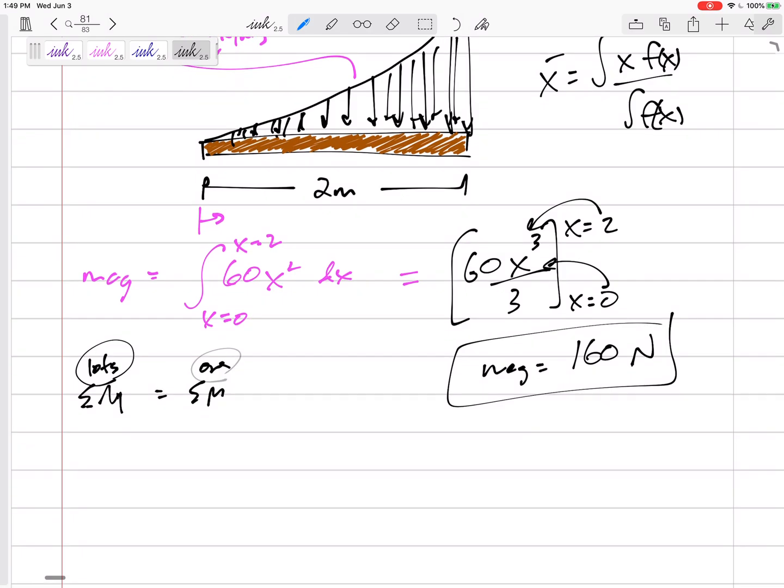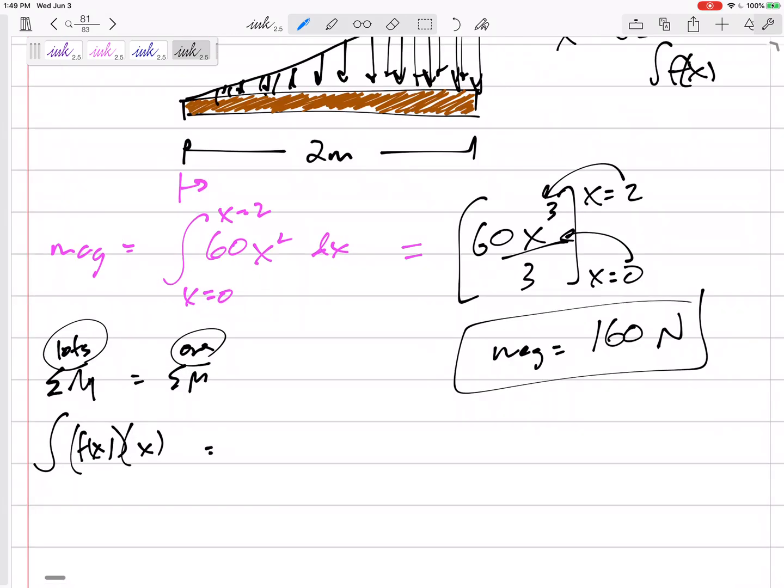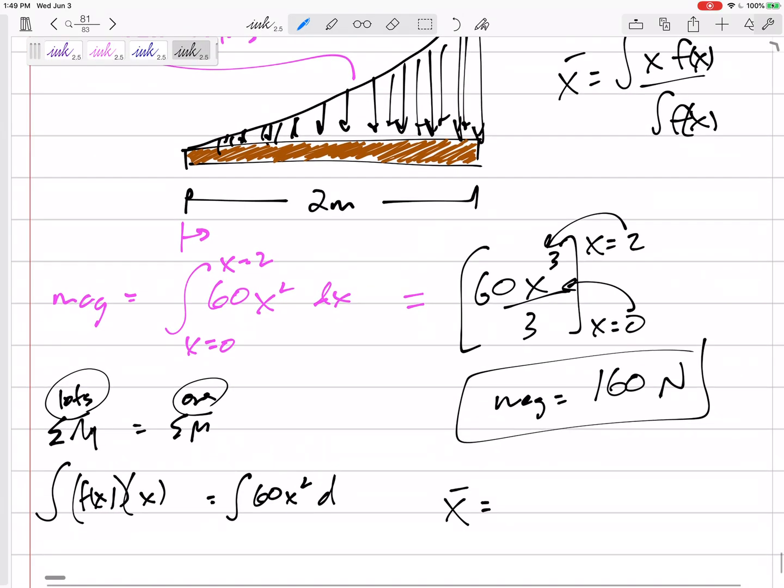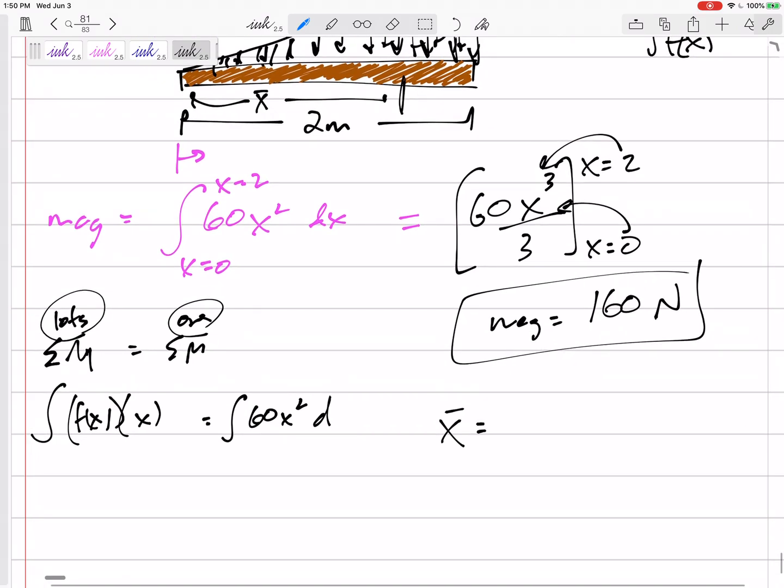And where would I put it? And so here, instead of summing, we are integrating the force, which is the function, times the distance, which is x. And this would equal the force, which we just found, 60x squared, times the distance d. Either way, this is what we would get. The distance d, which is really the distance x, it is away from here, x bar, integral x, f of x over integral f of x. And f of x is just the function.